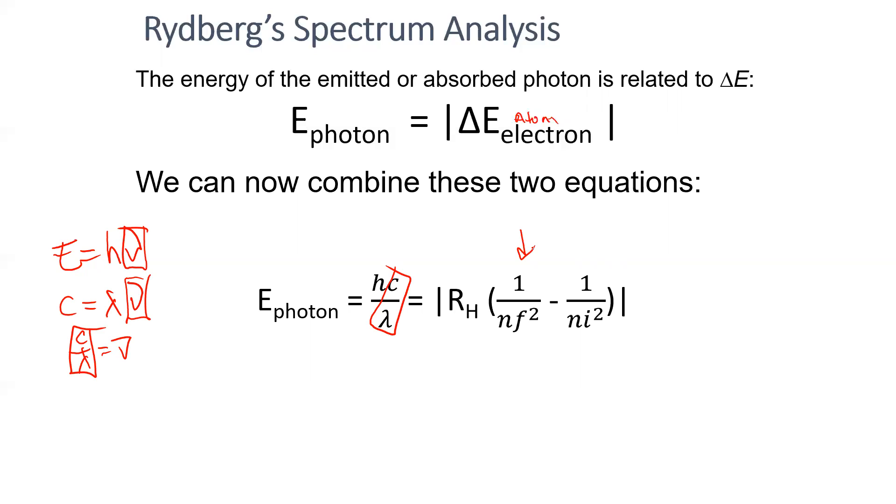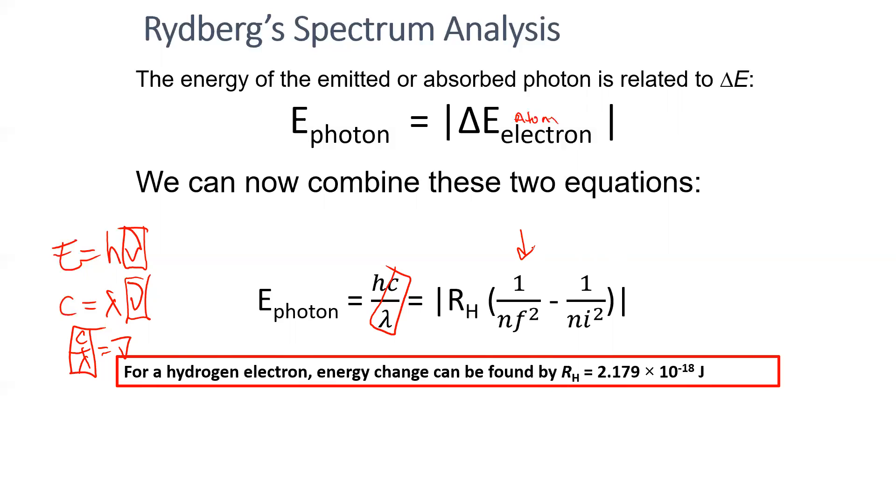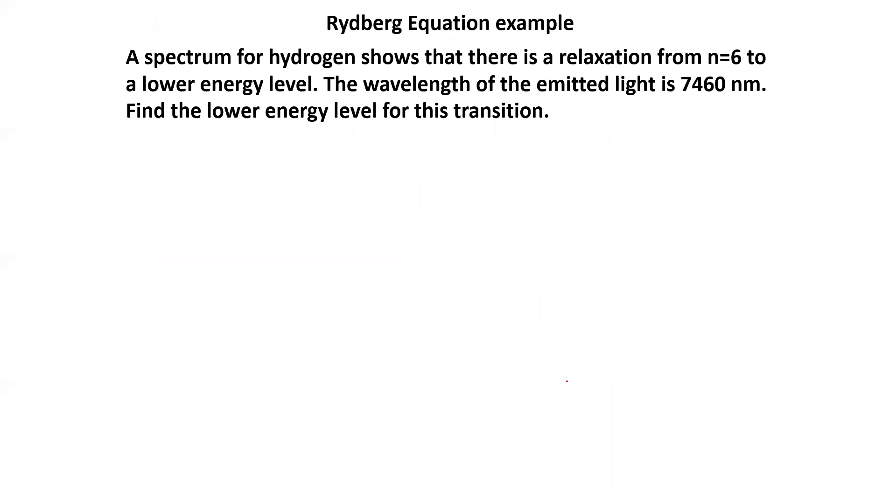We also get, from Rydberg's equation, how to determine the change in energy of an electron between energy levels. So because we're talking about the Bohr model and the hydrogen atom, we're going to use the Rydberg constant that's appropriate for that, which is 2.179 times 10 to the minus 18 joules.